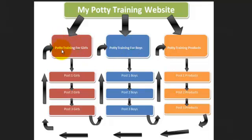Within each theme — say potty training for girls — you will have content relating specifically to potty training for girls. Each post will have relevant keywords and content specific to that theme. This exact structure is what Google looks for when determining which sites get higher rankings and will be perceived as relevant in search results.